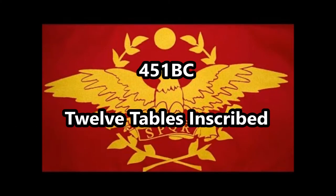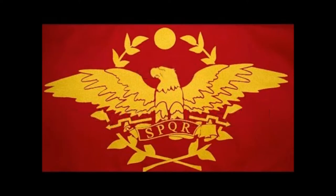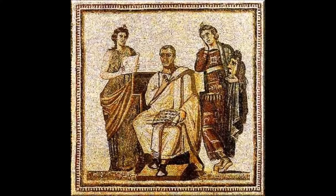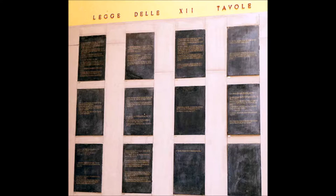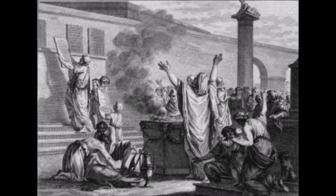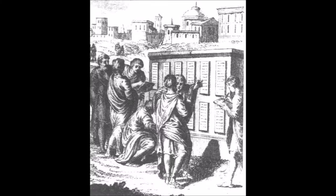In 451 BC, the Twelve Tables were inscribed. Fearing that the pontiffs, who were patricians interpreting the law in times of doubt, would interpret the law to their own private gain, the plebeian assembly had the law written down in public text so that all could read and understand it. A commission recorded the law on twelve bronze tables and hung them in the forum for all to see and read. Included in the laws: a woman always had to remain under the guard of a man; if a man failed to pay his debt, he would be enslaved; domestic cases, murder, criminal cases, and injury to body or property were also included. The Twelve Tables standardized the law and made it more accessible to the citizens who would attempt to live by it.